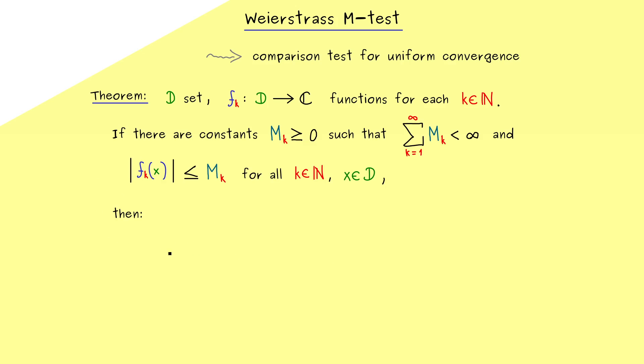So these are the assumptions we need. And then we get the result for the series of the functions fk. Indeed, by the comparison test for series, we immediately get that the sequence of partial sums converges for every x in D. However, we get even more, because we deal with functions, the term uniform convergence also makes sense. So we get out that the series is uniformly convergent.